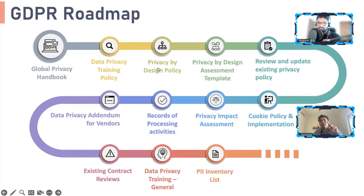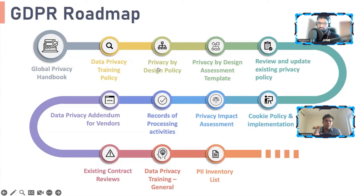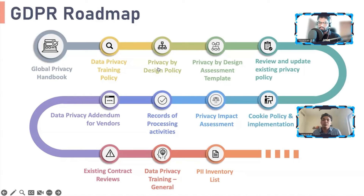The second type is role-based training. I conduct a one- to two-hour workshop where the relevant business team participates — for example, HR. In that workshop, I tell them what the requirements are for the records of processing activity, what a DPIA is, and give them insight into the process and how we'll help them identify risk while needing certain inputs from them.